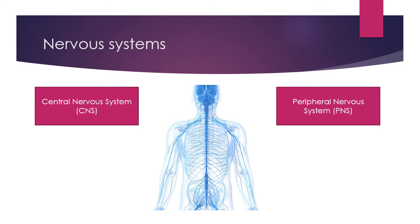The CNS includes the brain and the spinal areas of the body — that vertical column of the human body. We also have the peripheral nervous system, the PNS, which includes the nervous system that controls all of our limbs, such as our arms and our legs, and all the areas outside of that central column.